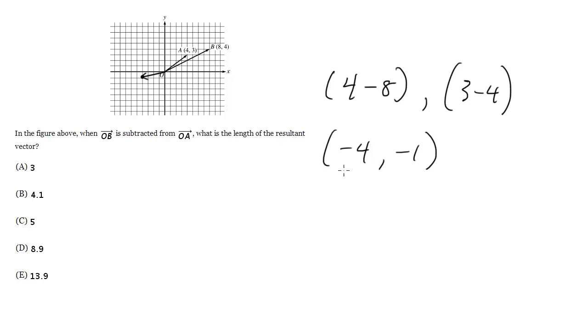So we go ahead and we do 4 squared, or negative 4 squared, plus negative 1 squared. And then we square root that, and this is going to be equal to the magnitude. We'll call it D.